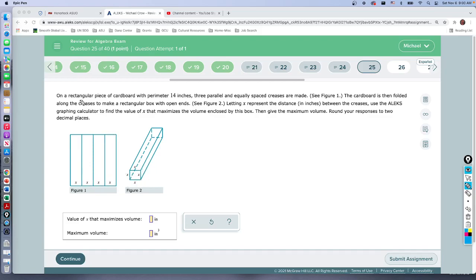So here we're looking for a rectangular piece of cardboard with a perimeter of 14 inches. Three parallel equally spaced creases are made which divides it into four pieces, each equal in space. The cardboard is folded along the creases to make a rectangular box with open ends, letting X represent the distance between the creases. We're given the calculator to find the value of X that maximizes the volume.